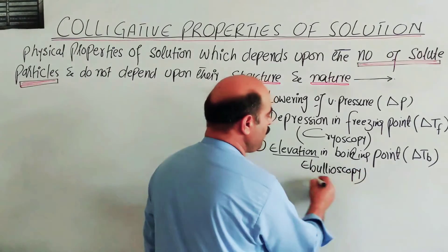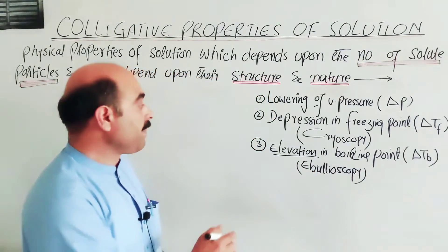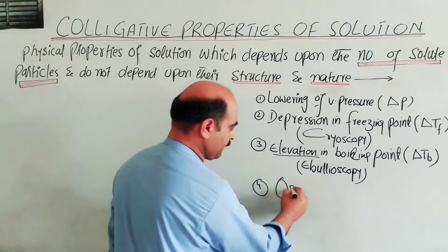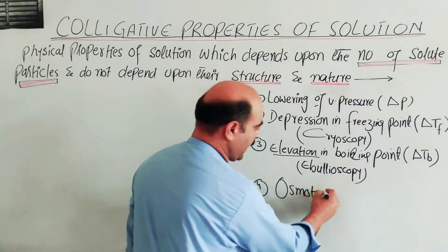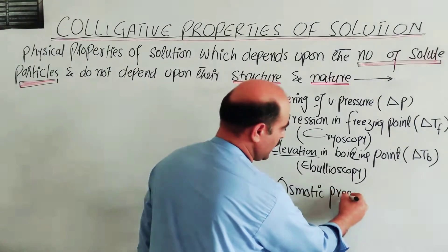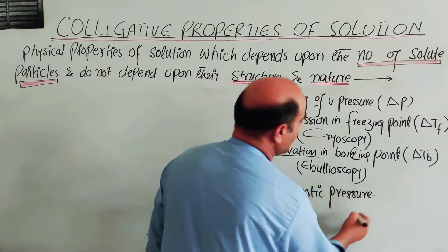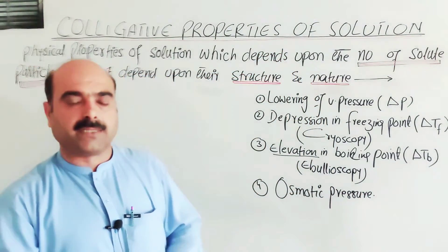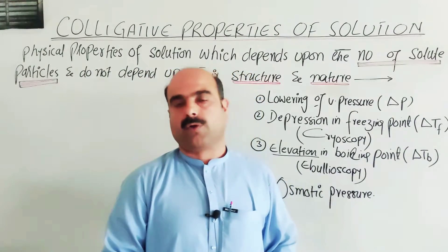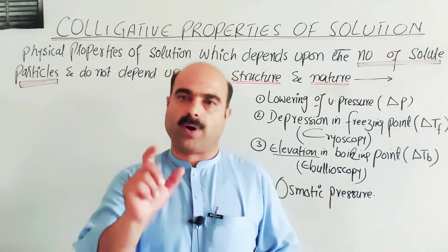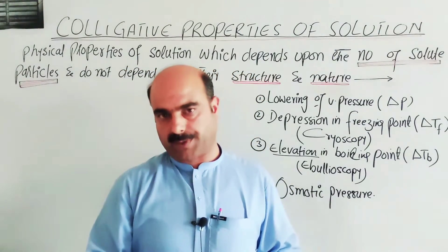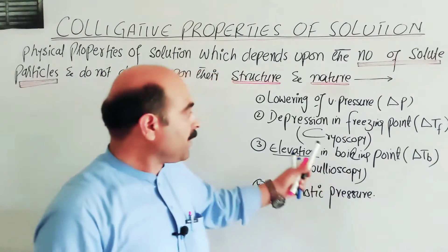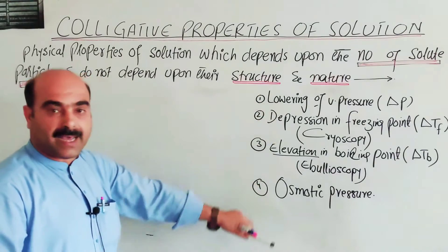Ebullioscopy. The fourth colligative property is osmotic pressure. So, if you are asked a short question — define colligative properties, or name the colligative properties — here are the four colligative properties.